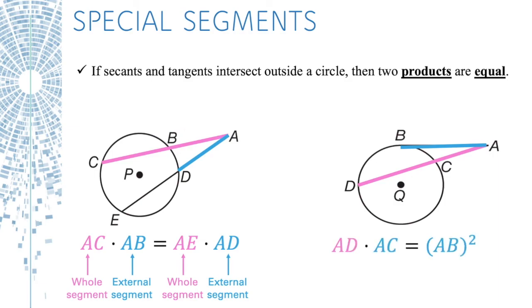AD times AC equals AB squared. So AD, that's the whole segment, times the external segment. That's just like the one we did before. But the other one, we just take the tangent segment and multiply it by itself.